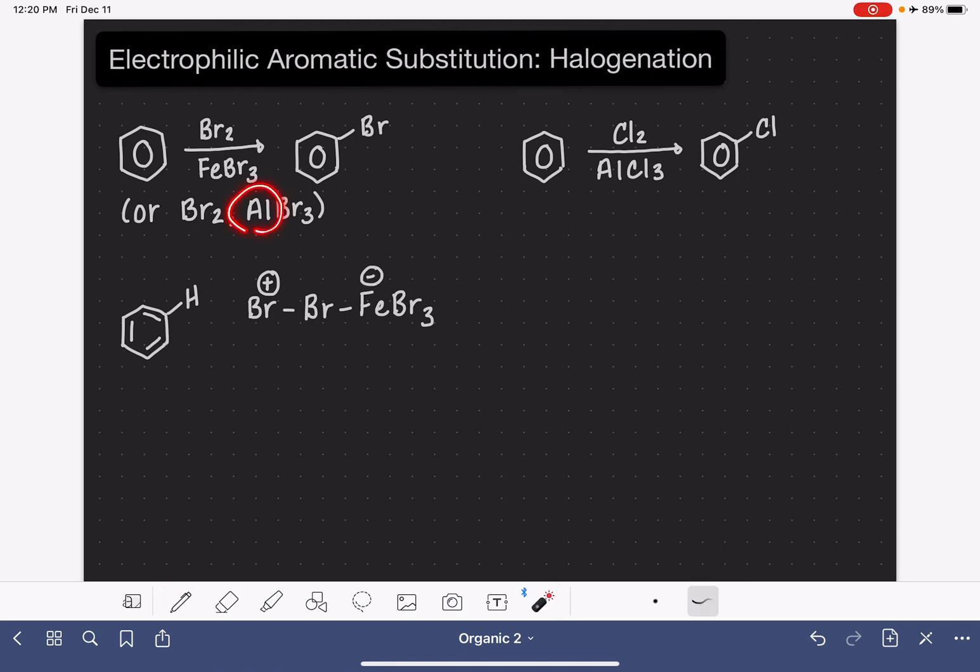If we were using aluminum, this would be aluminum instead, still with a negative charge, and then if we were using our chlorine reagents, we would just substitute all of these for chlorines as well.